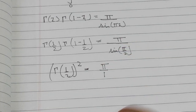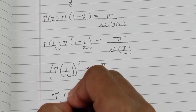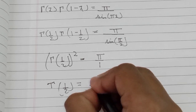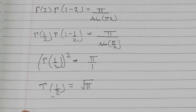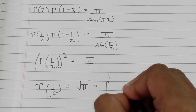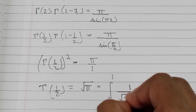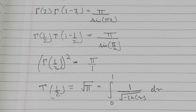Taking the square root of both sides, Γ(1/2) equals square root of pi. Therefore, the integral from 0 to 1 of 1 over square root of negative ln(x) dx equals square root of pi. Thanks for watching my channel — please subscribe, like, share, and comment!